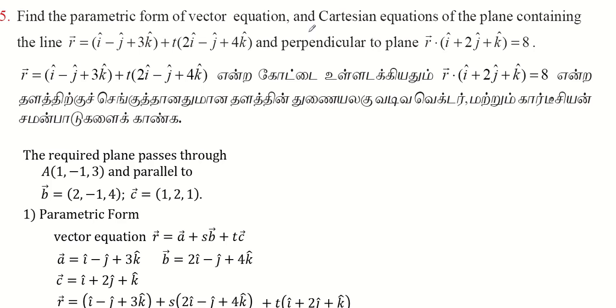Find the parametric form of vector equation and Cartesian equations of the plane containing the line R vector is equal to I vector minus J vector plus 3K vector plus T into 2I minus J plus 4K, and perpendicular to the plane R vector dot I plus 2J plus K equal to 8.